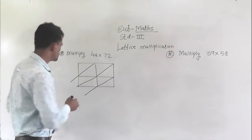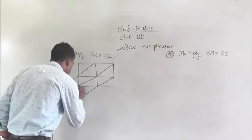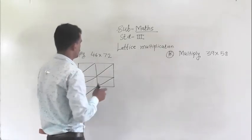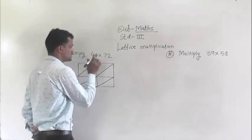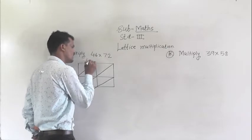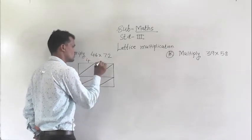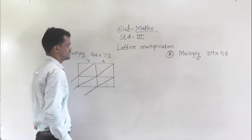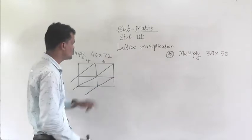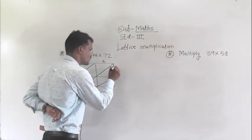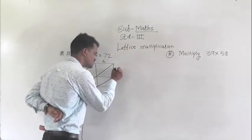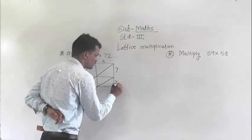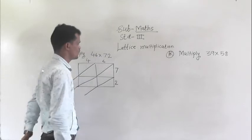Next step is to write the number 46. Write here 4, write here 6. Then 72, write vertically — write 7 here and 2 here.